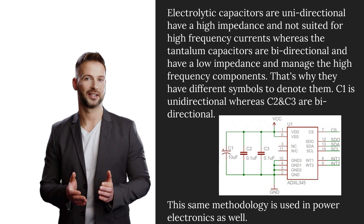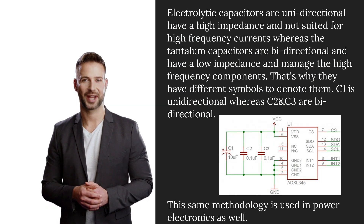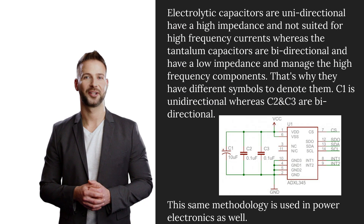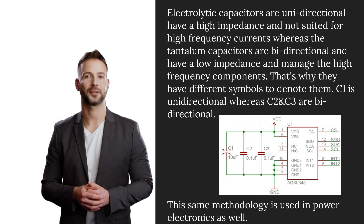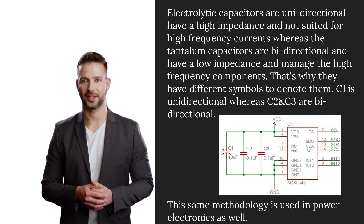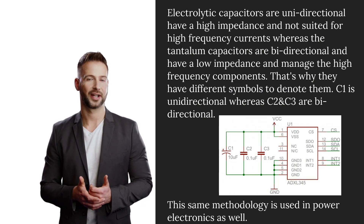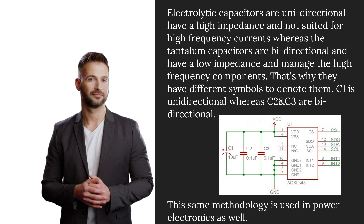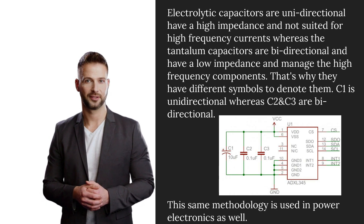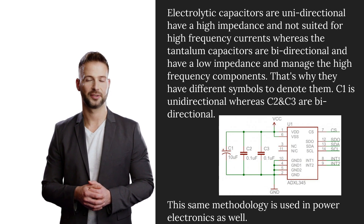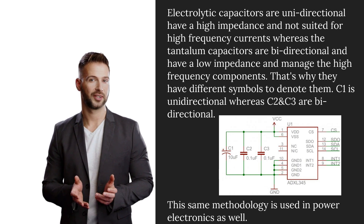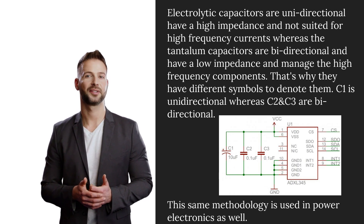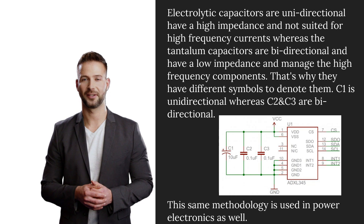Electrolytic capacitors are unidirectional, have a high impedance, and are not suited for high-frequency currents, whereas tantalum capacitors are bidirectional and have a low impedance, managing the high-frequency components. That's why they have different symbols to denote them — C1 is unidirectional whereas C2 and C3 are bidirectional.